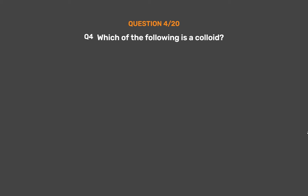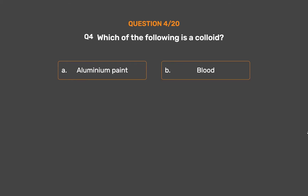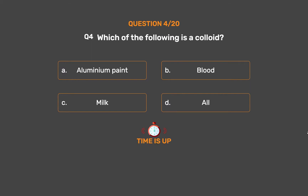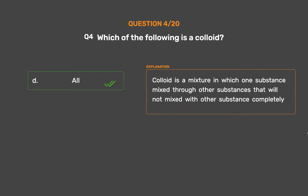Question number 4. Which of the following is a colloid? Option A: Aluminium paint. Option B: Blood. Option C: Milk. Option D: All. The correct answer is Option D: All. A colloid is a mixture in which one substance is mixed through another substance but does not mix completely.